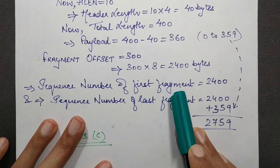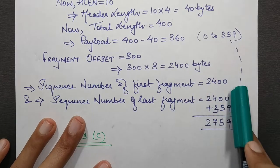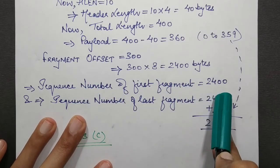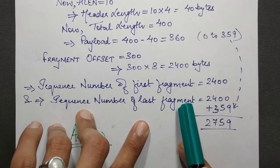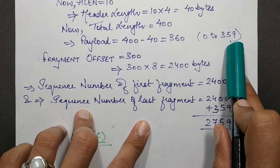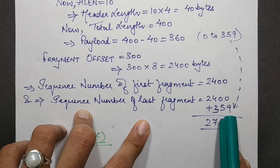So now the sequence number of the first fragment will be 2400, and the sequence number of the last fragment will be 2400 + 359 = 2759.